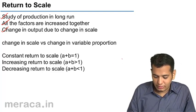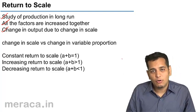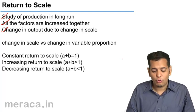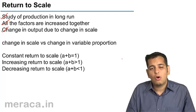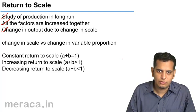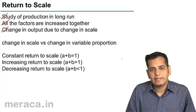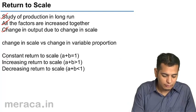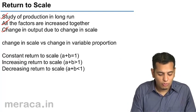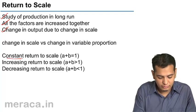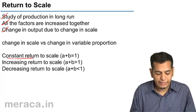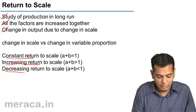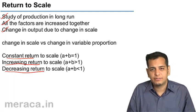Now let us understand the law of returns to scale. The law of returns to scale operates in three stages or three categories. The first is the law of constant returns, the second is the law of increasing returns, and the last is the law of decreasing returns.